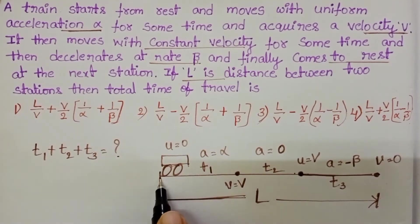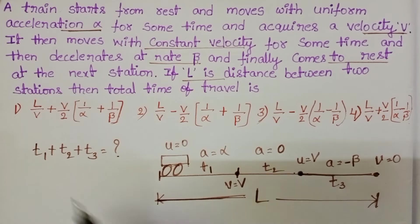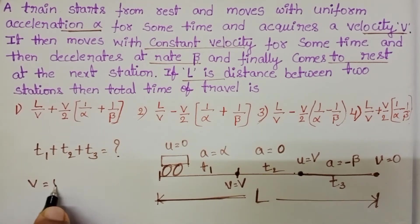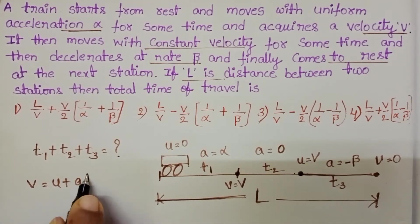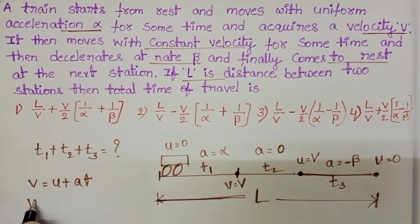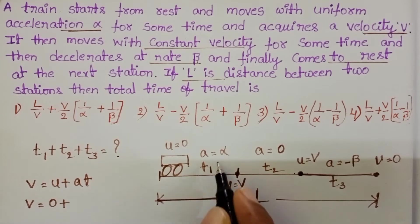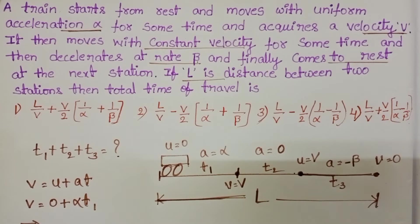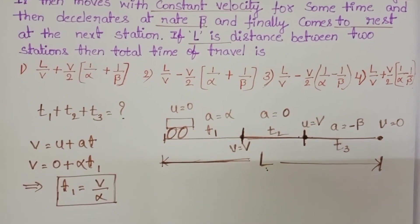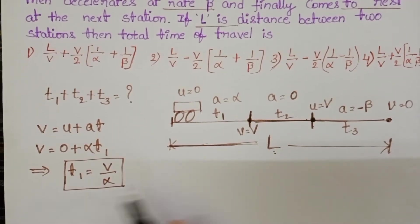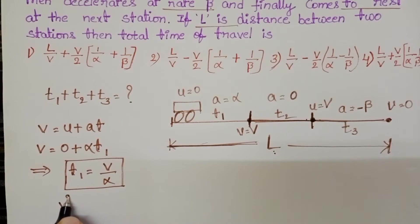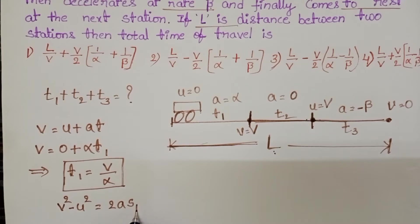In the first part of the journey, time is T1. Using the equation of motion v equals u plus at: final velocity is v, initial velocity is 0, acceleration is alpha, and time is T1. From this, T1 equals v by alpha. For the distance S1 travelled in T1, using v² minus u² equals 2aS1, with initial velocity 0, we get S1 equals v² by 2alpha.